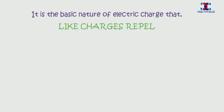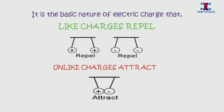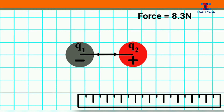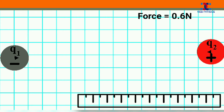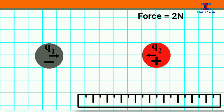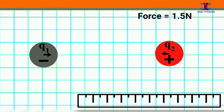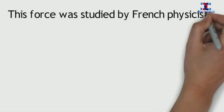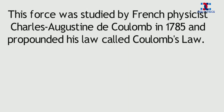It is the basic nature of electric charge that like charges repel and unlike charges attract. You can see from this animation that the force between the two point charges increases with the decrease in distance between them, and the force decreases with the increase in distance between them. The direction of force on each charge is being shown by an arrow in this animation. This force was studied by French physicist Charles-Augustin de Coulomb in 1785, and he propounded his law called Coulomb's Law.